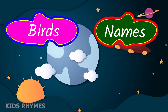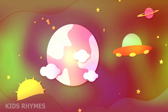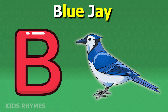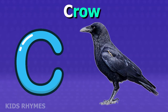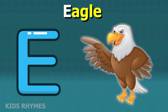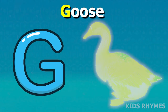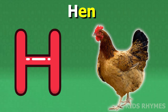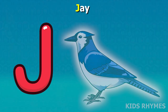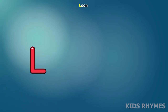Bird's name according to alphabet. A for Albatross, B for Blue Jay, C for Crow, D for Dove, E for Eagle, F for Flamingo, G for Goose, H for Hen, I for Ibis, J for Jay, K for Kingfisher, L for Loom.